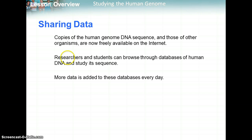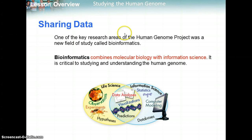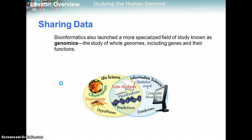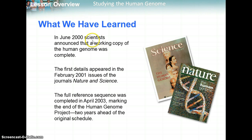Researchers and students can now browse through databases on the Internet with all this DNA information, and more data is added every day. One key research area of the Human Genome Project was a new field called bioinformatics, which combines molecular biology with information science — critical for studying the human genome. It uses statistics, computer modeling, and databases alongside the scientific method. This also helped make genomics — the study of whole genomes, including genes and their functions — possible.